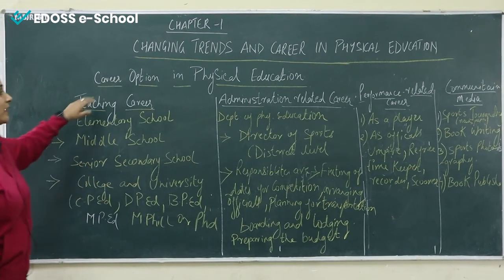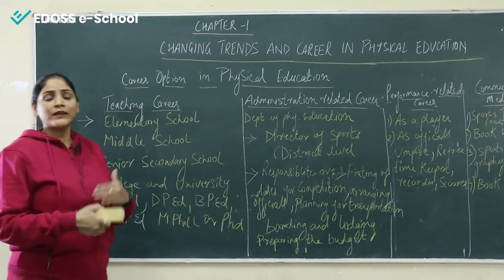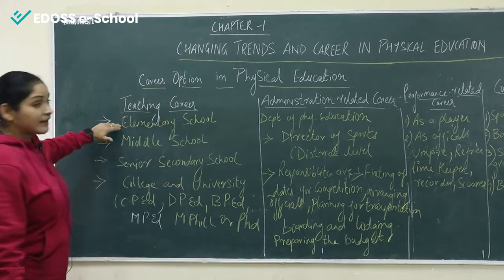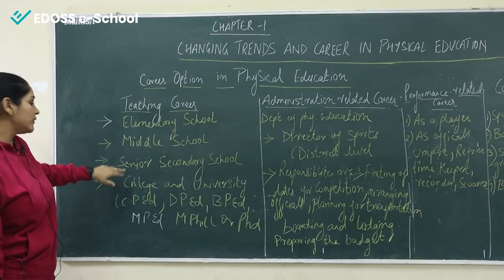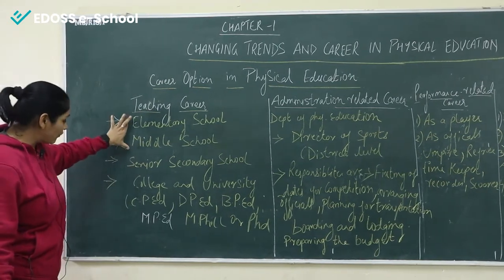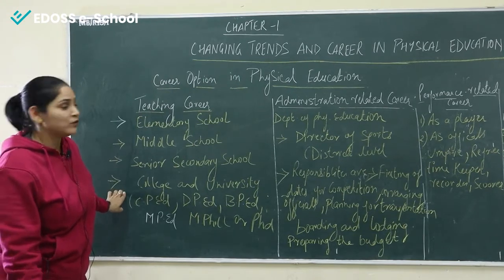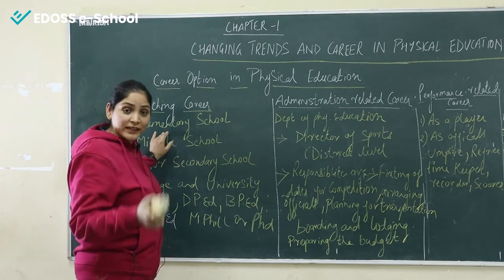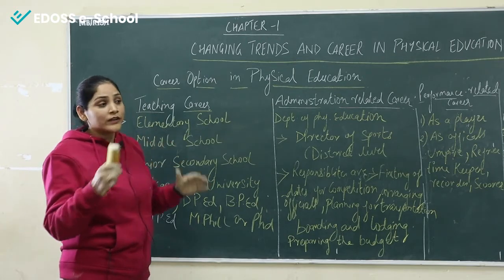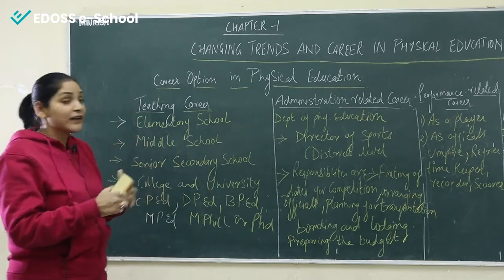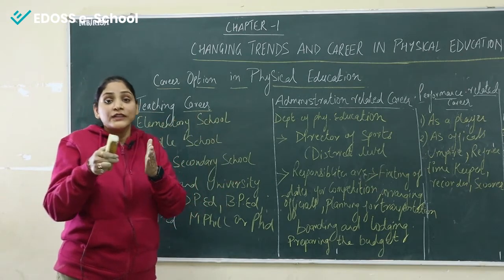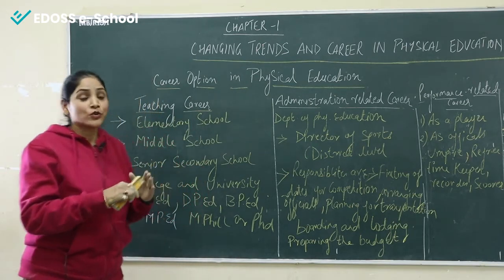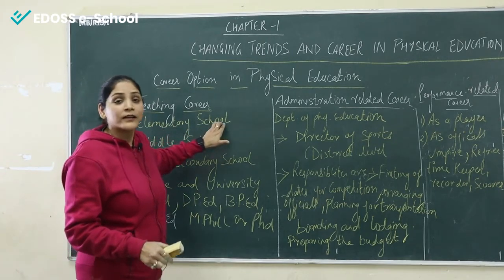Now, students, we'll talk about career options in physical education. We can make many careers in this field. First, let's discuss teaching careers. In a teaching career, we have elementary school, middle school, senior secondary school, and college and university level. At the elementary school level, children's minds are developed, their physical appearance is developed, their mental level and neuromuscular coordination are kept in mind, and creative ideas and creative thinking are given to them to indulge them in physical activity.